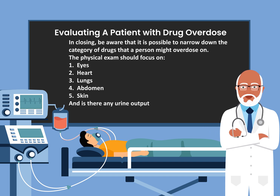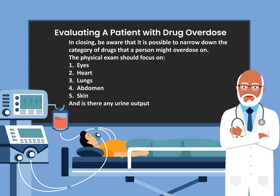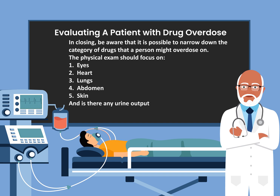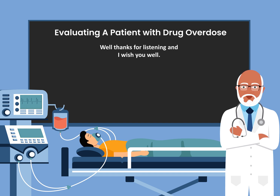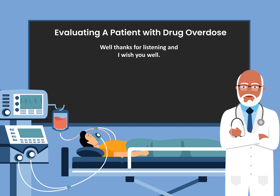In closing, be aware that it is possible to narrow down the category of drugs that a person might overdose on. The physical examination should focus on the eyes, the heart, the lungs, the abdomen, and the skin, and there should be evidence of urinary output. Thanks for listening, and I wish you well in caring for patients who present to the ER with drug overdose.